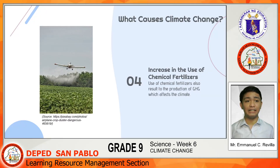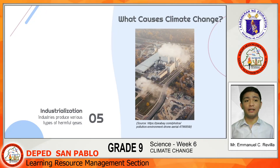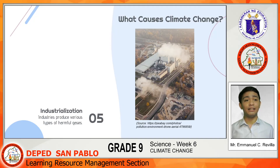Increase in the use of chemical fertilizers. People use various types of fertilizers for more production of foods and crops, again to address the needs of a growing population. However, aside from affecting the land, it produces greenhouse gases which results in an increase in average global temperature. Industrialization — production in factories and industries produces various types of harmful gases like carbon dioxide and sulfur dioxide, dirt and dust, and even liquid wastes. It causes acid rain and again increases greenhouse gases in our atmosphere.